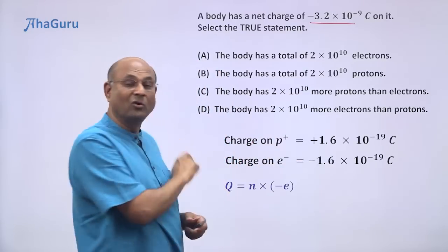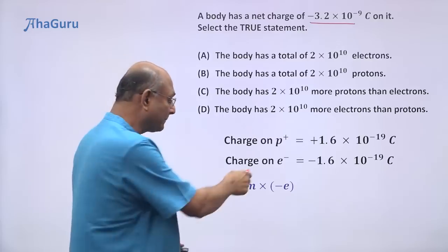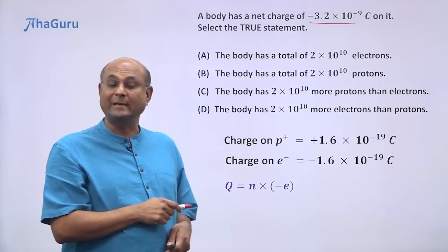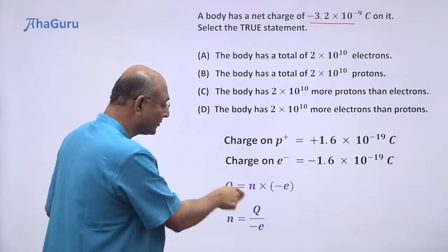So we then know that it must have some integer multiple of the electrons. So Q must be n times -e. So n must be Q by -e.